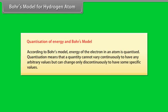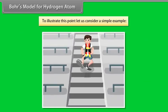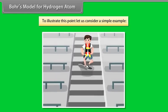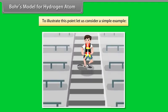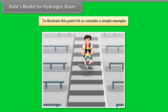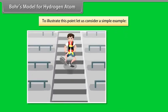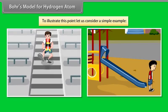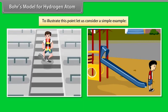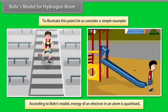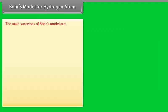Quantization of energy and Bohr's model: Energy of the electron in an atom is quantized — it cannot vary continuously but changes only discontinuously to specific values. To illustrate: a person moving down a staircase has only certain definite energy values (quantized), whereas a person moving down a ramp can have any value of energy (not quantized). According to Bohr's model, the energy of an electron in an atom is quantized. Main successes: (1) Bohr's model explained the stability of an atom.